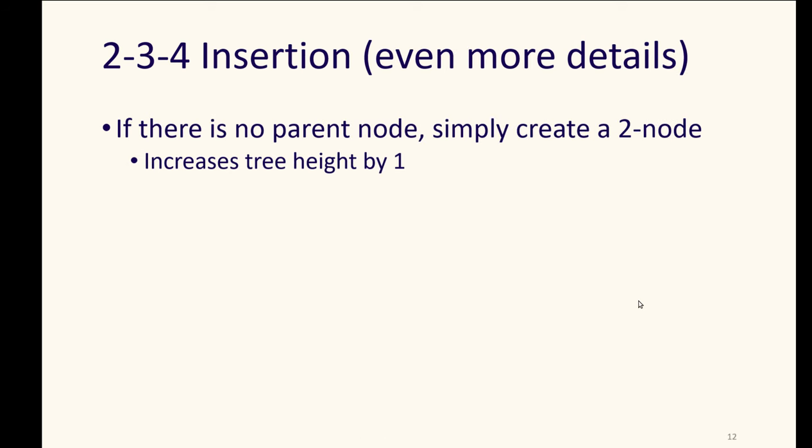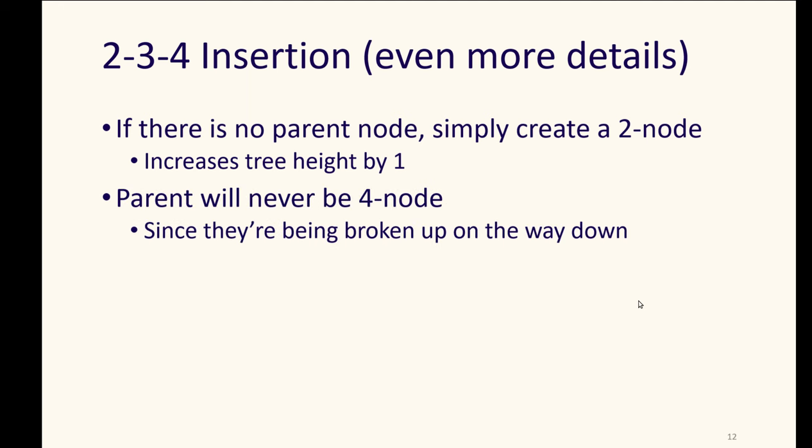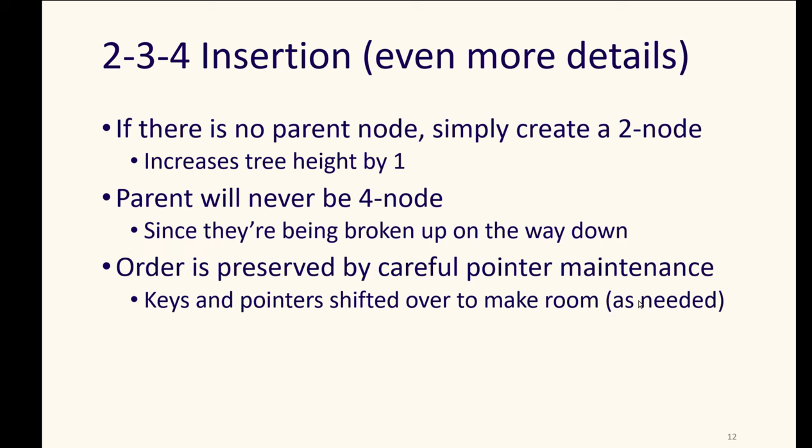When you have to split the four nodes, if there was no parent node to that four node, you can simply create a two node using that middle key and place it up above the node that you were trying to split. It increases the tree height by one, but we know that the parent of any particular node as we come down will never be a four node. So we'll never reach the case where we needed to lift up a middle key, but find that there's not room for it, because we're breaking up the four nodes on the way down. The order gets preserved by carefully maintaining the pointers.